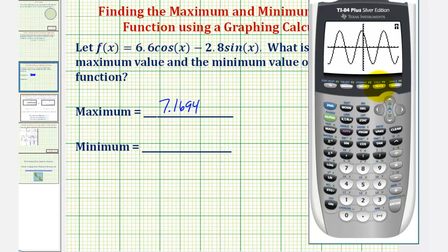We'll press second, trace again for the calculation menu. Now, we'll select option three for a minimum. Let's go ahead and find this point here to find the minimum function value. So, for left bound, we'll press the right arrow to get closer to the low point. But, we'll still stay to the left. Maybe somewhere in here. Press enter.